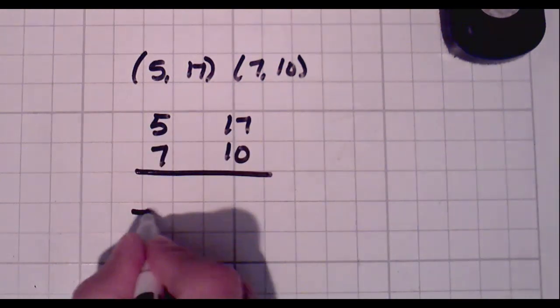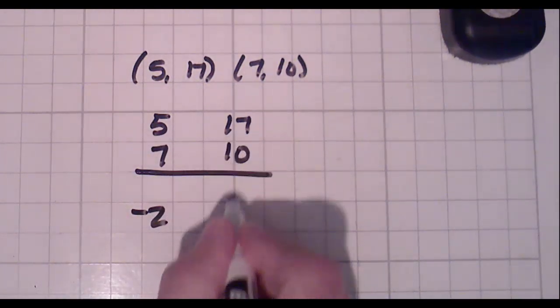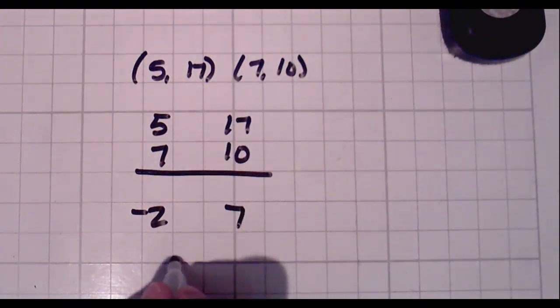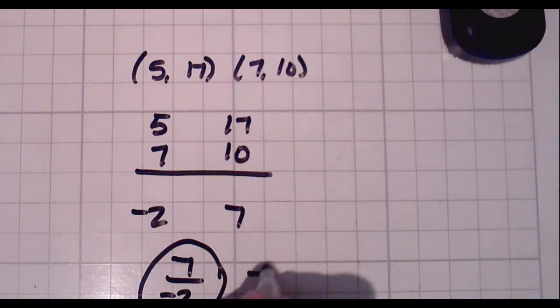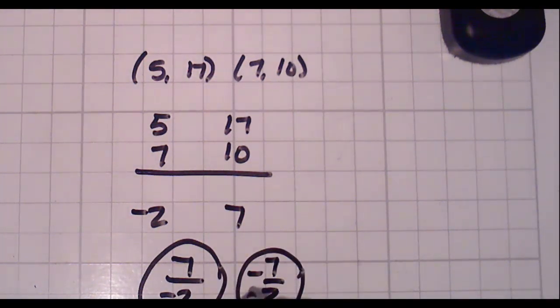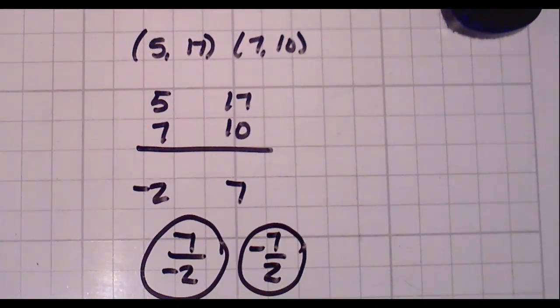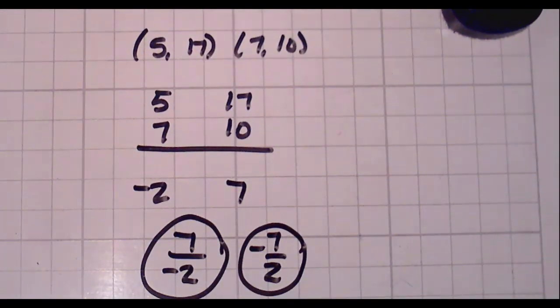5 minus 7 is negative 2. 17 minus 10 is 7. Second number divided by first number. Your answer is negative 7 halves. Now it doesn't matter if I say negative 7 halves, 7 over negative 2, or negative 7 over 2. It's exactly the same thing. It doesn't matter where you put the negative as long as it's somewhere in there and only in one place.